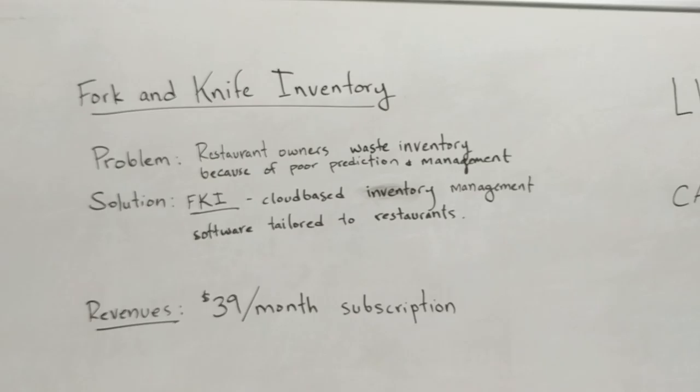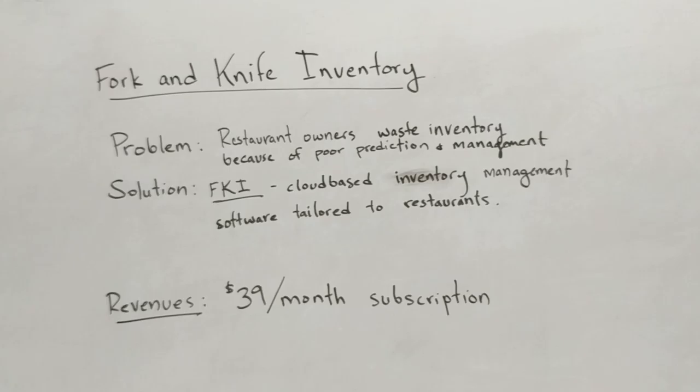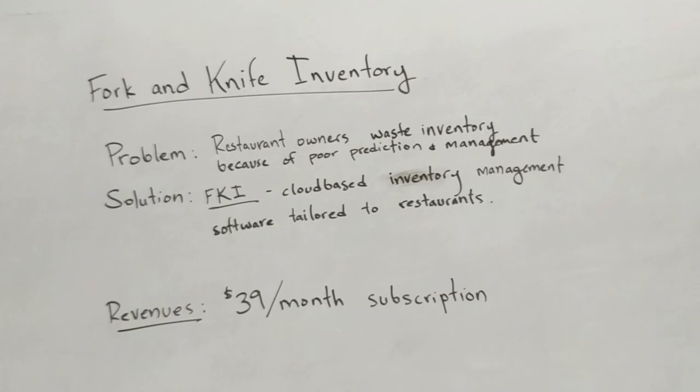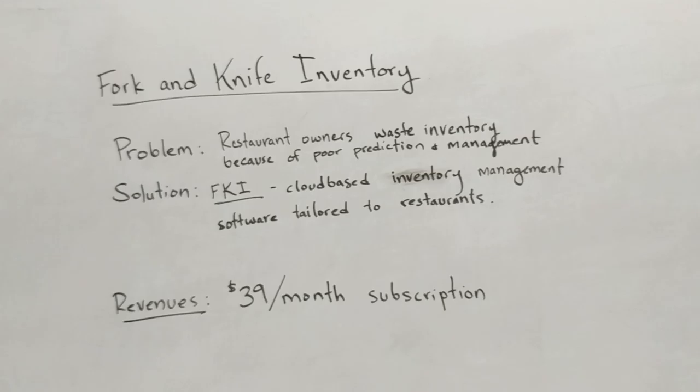I want to start out with an example. We're going to use Fork and Knife Inventory, which is in one of my sections. I'm making up all the numbers here, so I haven't done their homework for them. Essentially the problem is that restaurant owners waste inventory because of poor prediction and inventory management. Their solution is that they're going to have some sort of cloud-based software — an inventory management system tailored to restaurants — and we'll assume that using it, they're going to waste a lot less money because they'll buy the right amount of stuff.